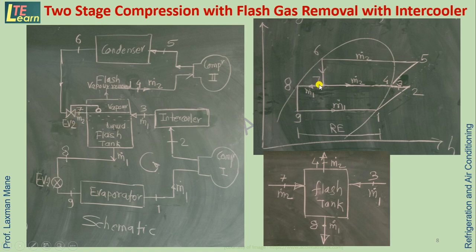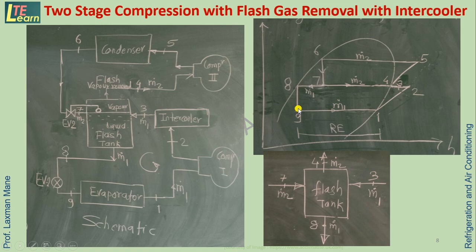From 6 to 7, upper expansion takes place through expansion valve 2. At point 7, liquid is separated from flash vapor in the flash tank — the saturated liquid (7 to 8) is passed through the lower expansion valve, giving expansion from 8 to 9 on the PH diagram. Across the evaporator, enthalpy changes from point 9 to point 1.